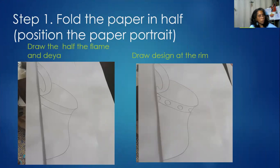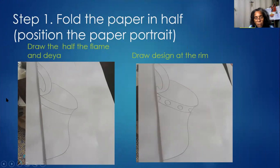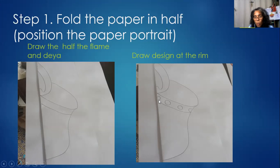Now, remember I told you about symmetry. Hold your paper portrait and fold it in half — this is your line of symmetry. You're going to draw your flame and your deya. I draw two parts to the flame: the inner part where I curve down and up, and the outer part. I give the deya a lip, swivel around, add another layer of the lip, and curve it down. You can embellish it and add more to the design.